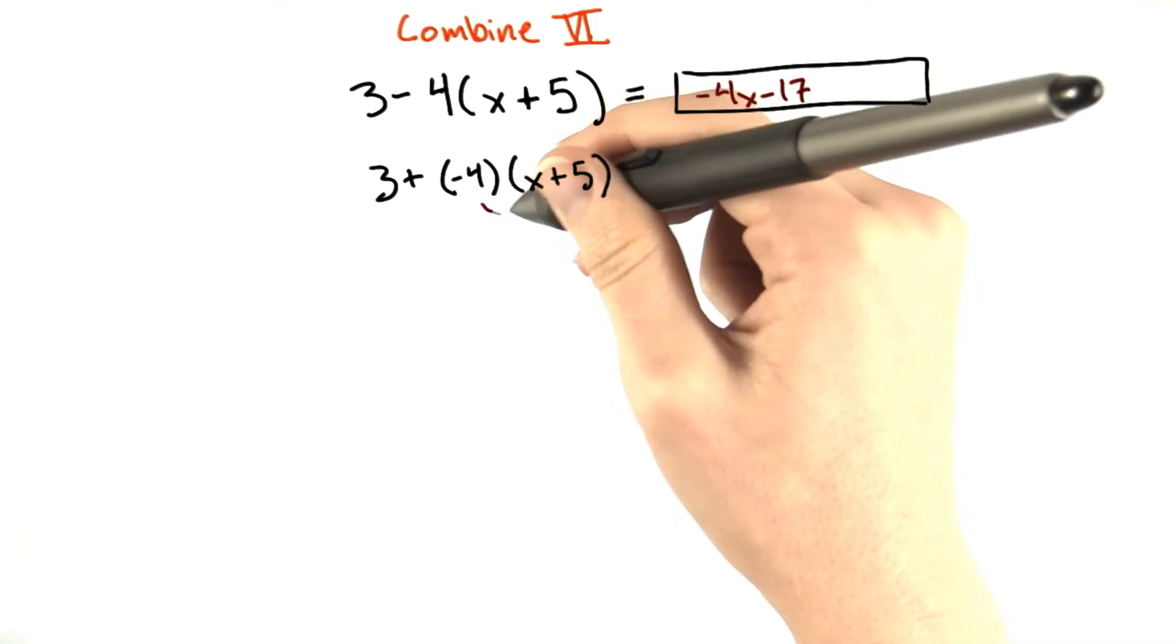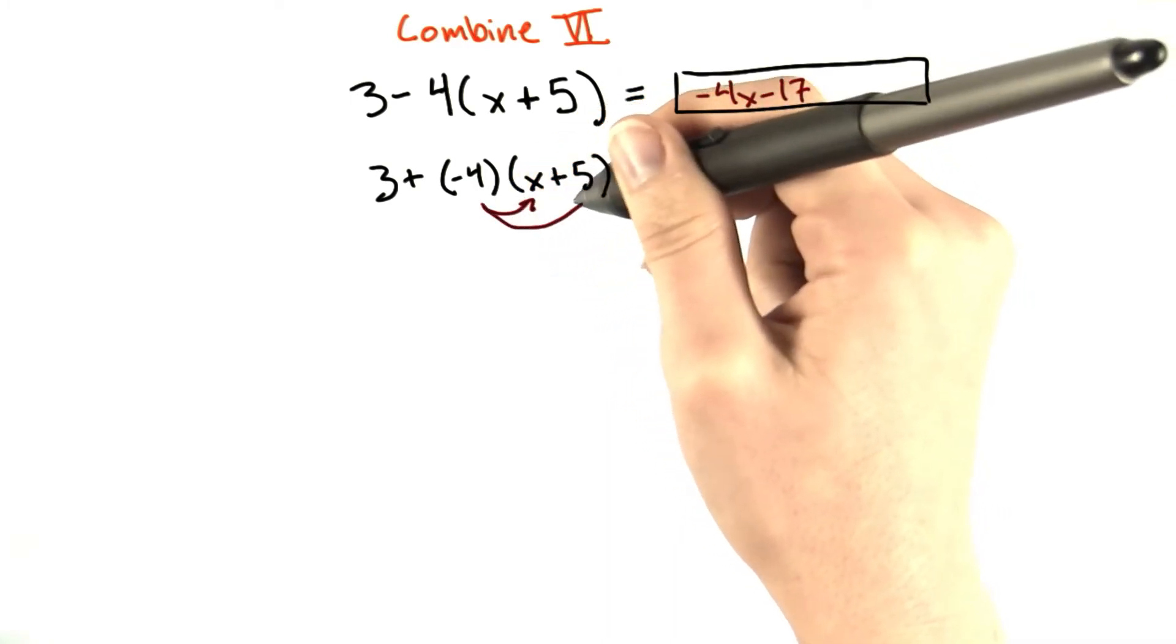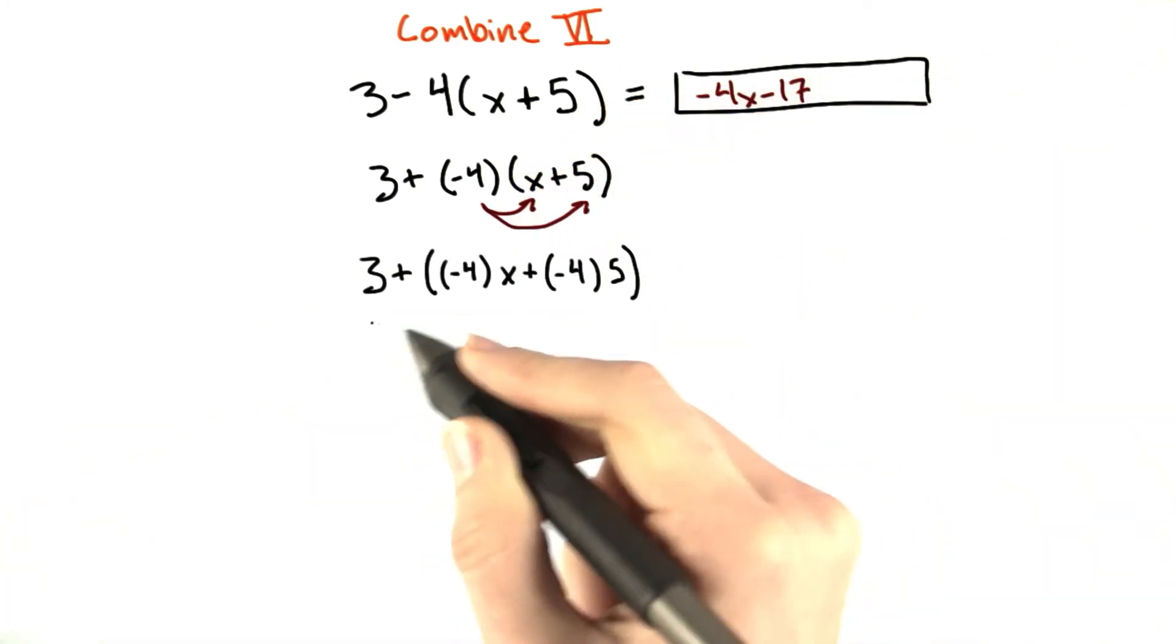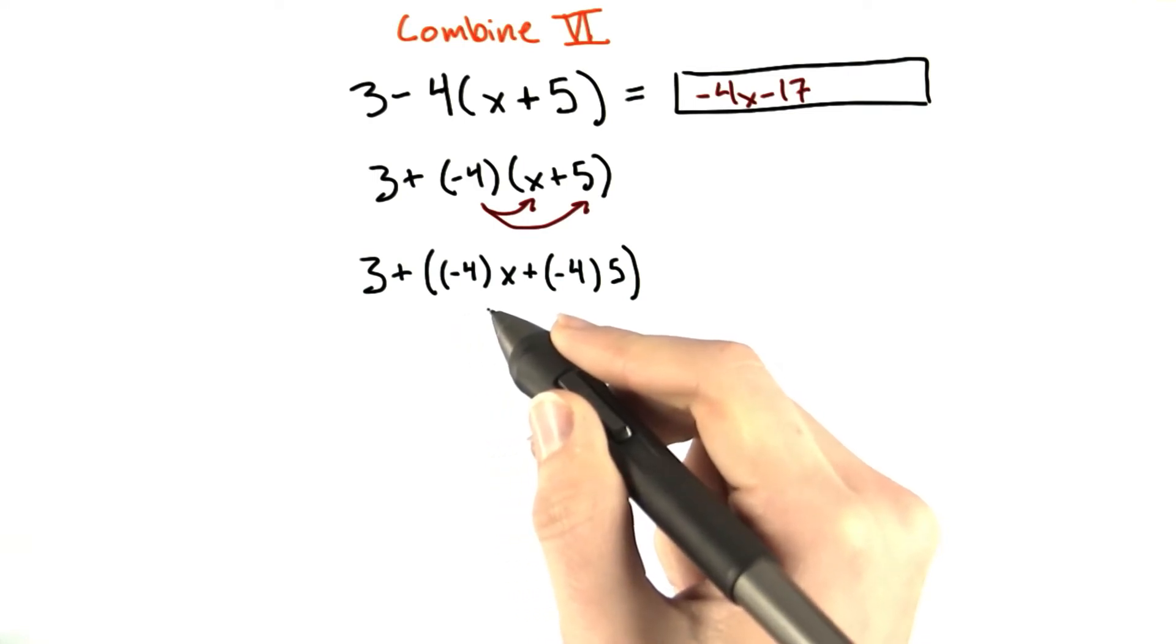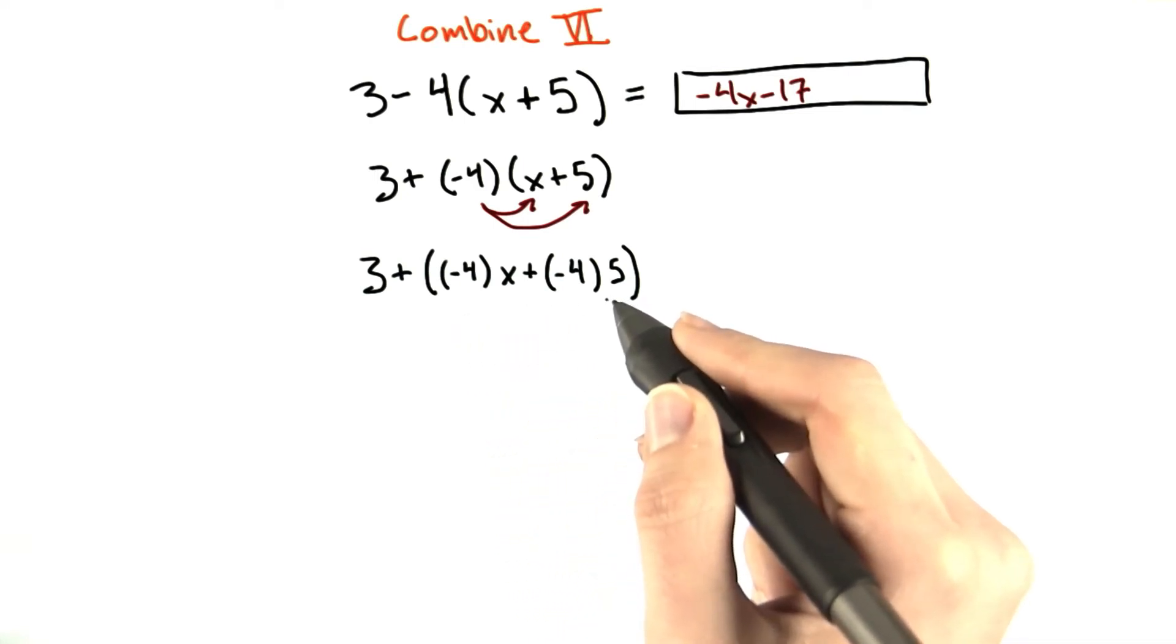Now we have to distribute this negative 4 to both terms inside the parentheses. And we get 3 plus negative 4 times x plus negative 4 times 5.